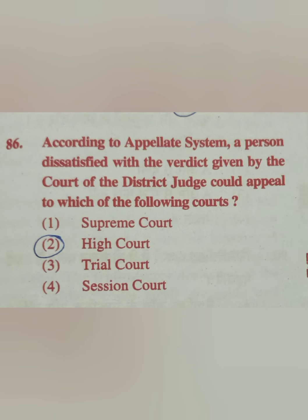Question 86: According to the appellate system, a person dissatisfied with the verdict given by the court of the district judge could appeal to which court? The correct answer is option 2 — the High Court. From district court we can go to the High Court.